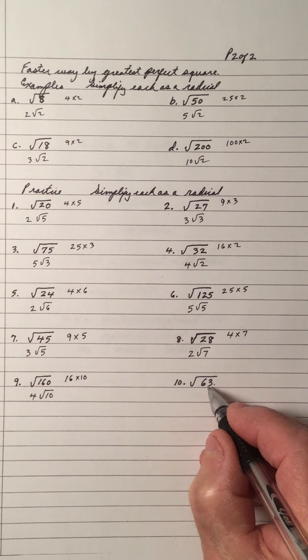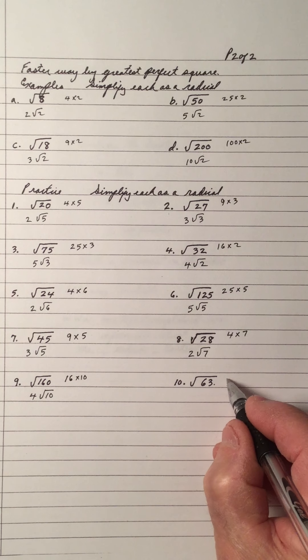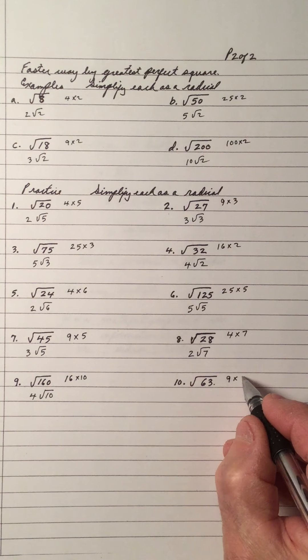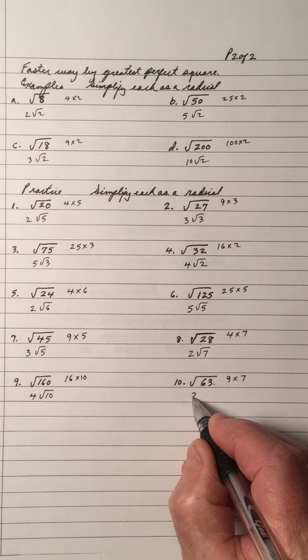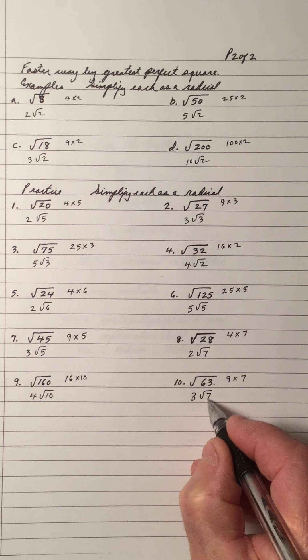63. The digits add up to be a 9. So it's divisible by 9. So 9 into 63. So 9 times 7 is 63. Square root of 9 is 3 and root 7.